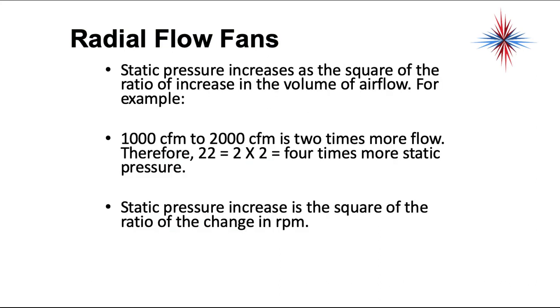Static pressure flow increases as the square of the ratio of increase in volume of airflow. For example, a thousand CFM to two thousand CFM is two times more flow. Therefore, 2 squared equals 2 times 2 equals 4 times more static pressure. Static pressure increase is the square of the ratio of change of RPM.